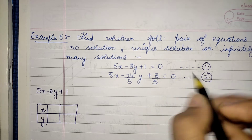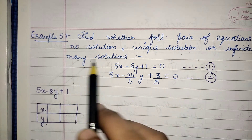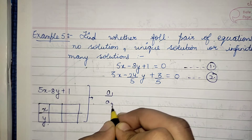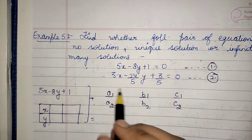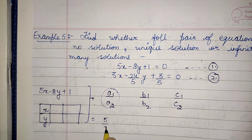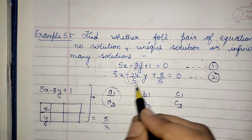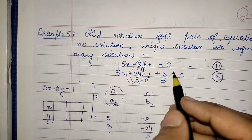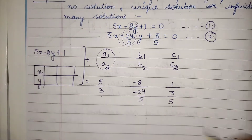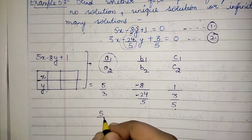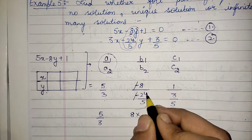Example 5: Find whether the following pair of equations has no solution, unique solution, or infinitely many solutions. We calculate a1/a2, b1/b2, and c1/c2. Here a1/a2 = 5/3, b1/b2 = (−8)/(−24/5), and c1/c2 = 1/(3/5).